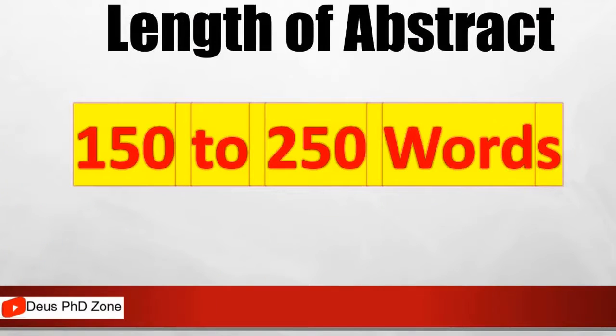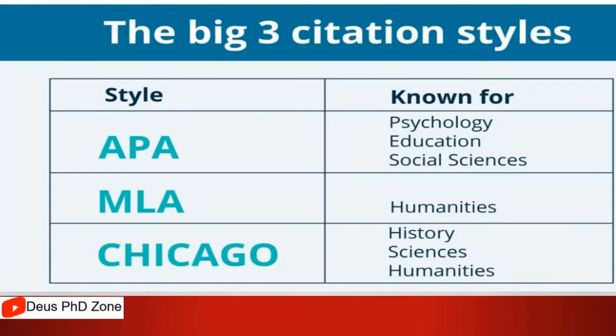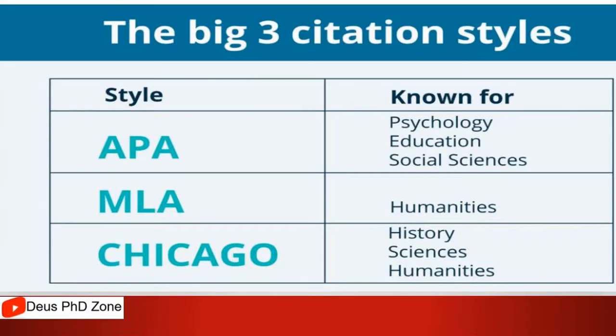The length of the abstract should be around 150 to 250 words. The three big citation styles are APA, MLA, and Chicago. Depending upon these styles, how many words you write — whether 150, 200, or 250 — depends upon your subject.